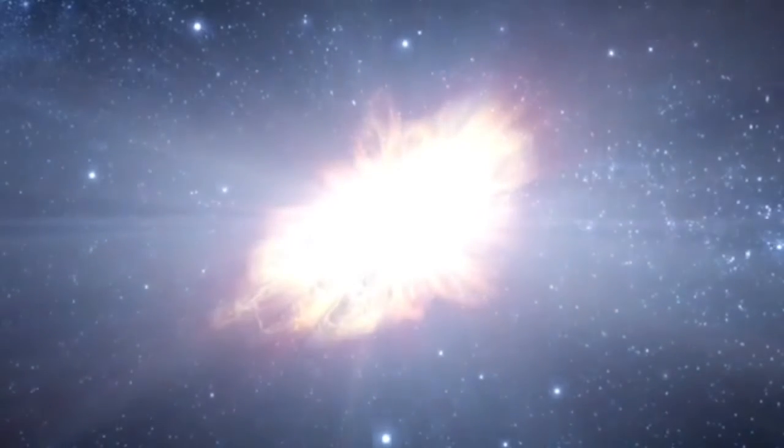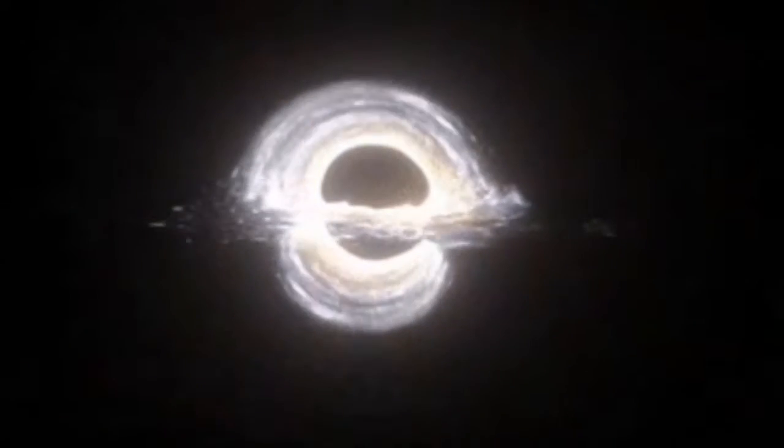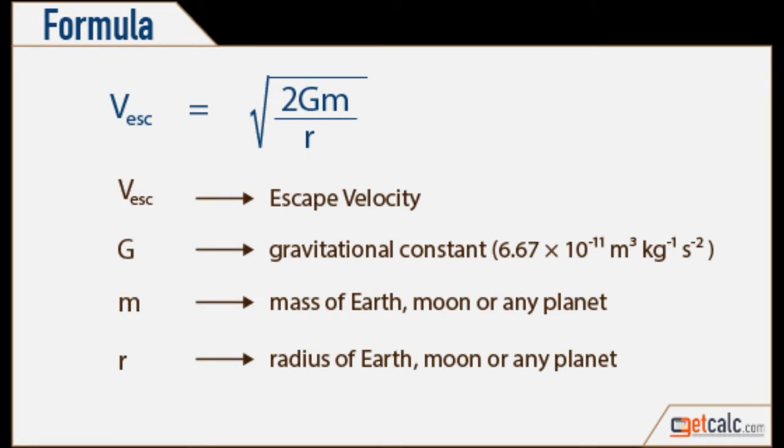Then slowly the star's core contracts so much that the density of the star becomes very high and leads to a situation where the escape velocity increases so much that even light cannot escape from it. Escape velocity is described by this equation: here Ve becomes even more than C, which is the speed of light, and becomes the black hole.